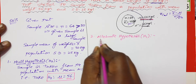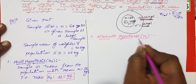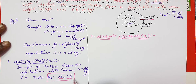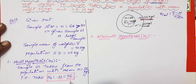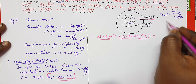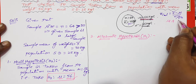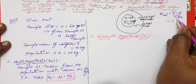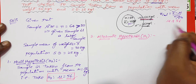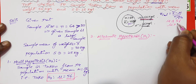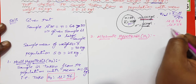Here is the alternate hypothesis H1. The statement of H1 is against H0 — that means the reverse. H1 can be mu not equal to 56, greater than 56, or less than 56.